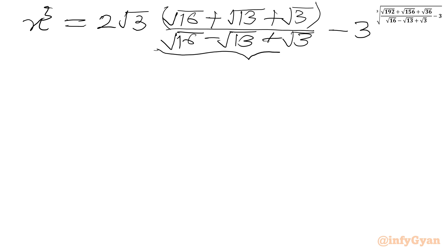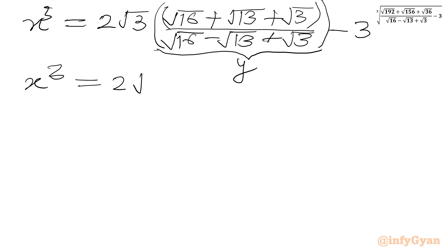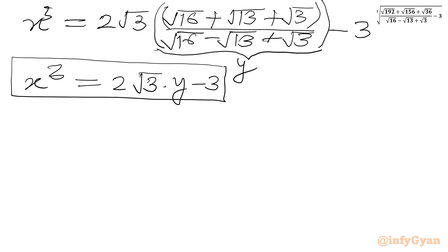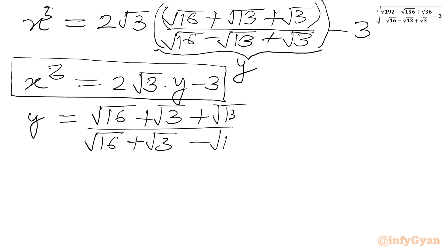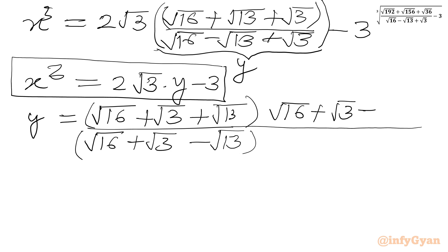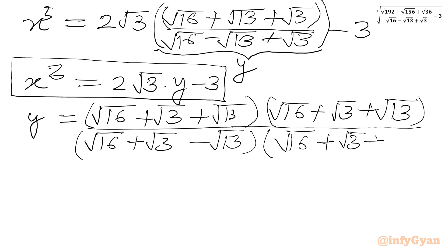Now I will consider this expression equal to y. So x³ equals 2√3 times y, minus 3. Let us simplify y separately. y is (root 16 plus root 3 plus root 13) over (root 16 plus root 3 minus root 13). Now I will use rationalization of the denominator. I will multiply by (root 16 plus root 3 plus root 13) in the numerator and denominator.